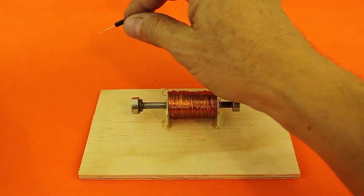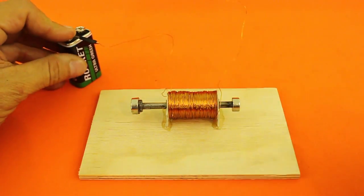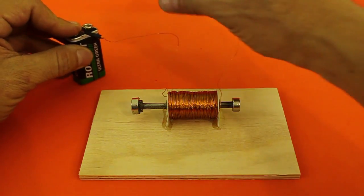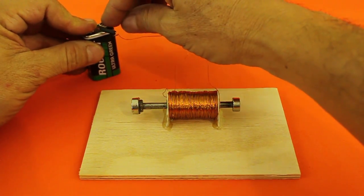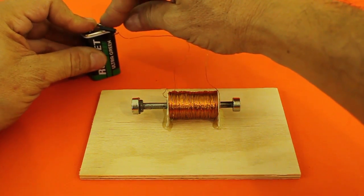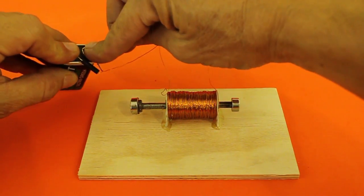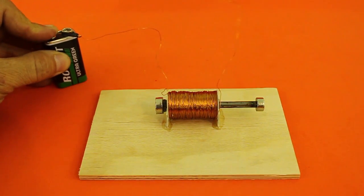I'm going to connect the battery to the solenoid through the magnetic switch and you can see that the axis does not move. But if we bring the switch close to the magnet, then now the axis moves.